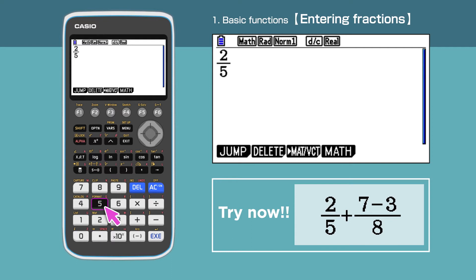Next, let's add another fraction. Press on the right side of the cursor and enter the plus sign. A fraction can include calculations in the numerator or denominator. Press 7 minus 3 for the numerator and enter 8 for the denominator.